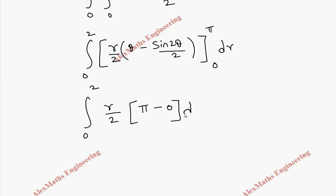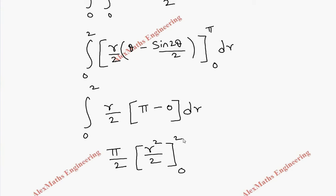We are left with only π r / 2. Here π / 2 is constant which can be taken out, giving π / 2 · integral of r dr from 0 to 2, which is r² / 2 with limit 0 to 2. Substituting 2: 2² / 2, the 2's cancel and we are finally left with π.